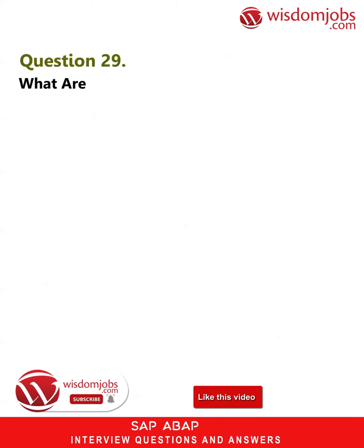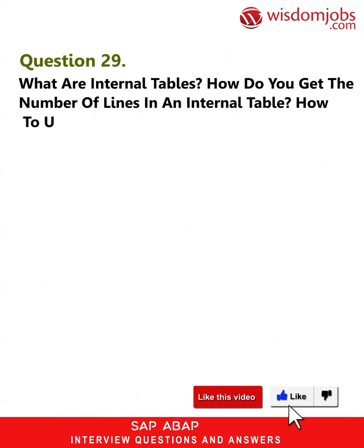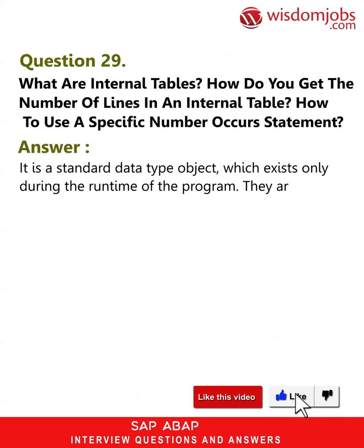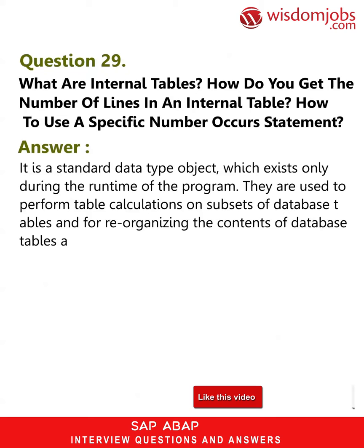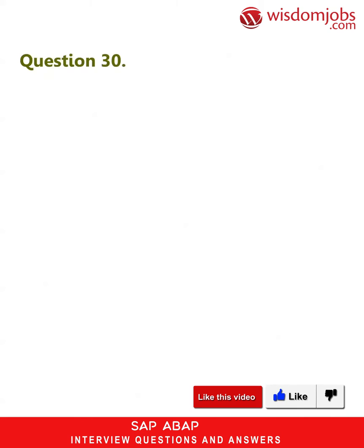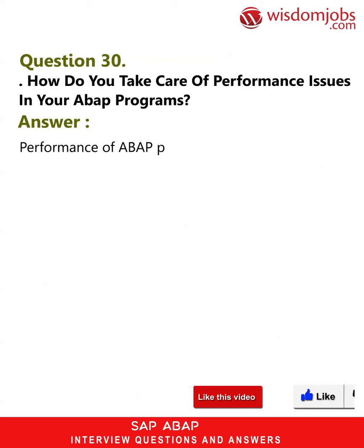Question 29: What are internal tables? How do you get the number of lines in an internal table? How do you use a specific number of occurrences statement? An internal table is a standard data type object which exists only during the runtime of the program. They are used to perform table calculations on subsets of database tables and for reorganizing the contents of database tables according to user needs. Using SY-DBCNT, the number of memory allocations the system needs to allocate for the next record population.